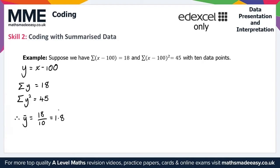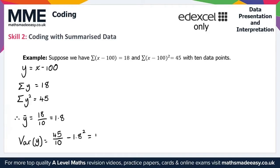For the variance of y, this is 45 over 10 minus the mean squared, so 45 over 10 minus 1.8 squared. Calculating this gives a variance of y equal to 1.26.